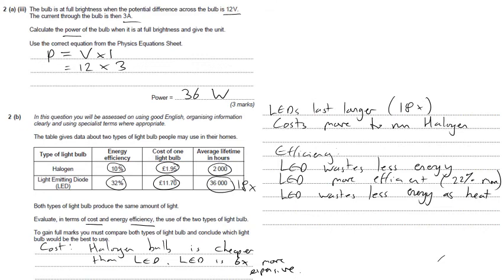And it requires a smaller input power for the same output power. So if we were to turn this into a good written answer, we need to take all of these little points that we've made and turn them into a sentence, several sentences along the lines of halogen bulbs are cheaper than LEDs. LEDs are six times more expensive than halogen bulbs, but LEDs last 18 times longer.